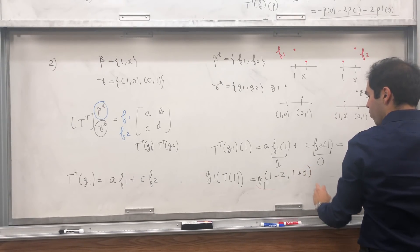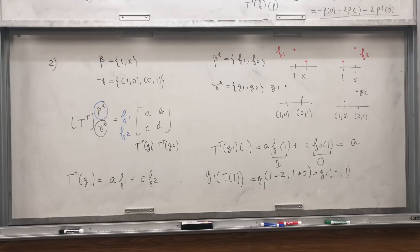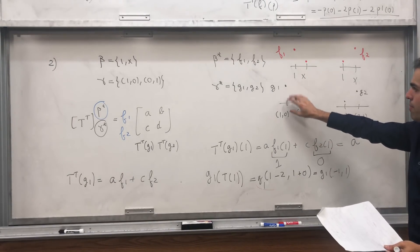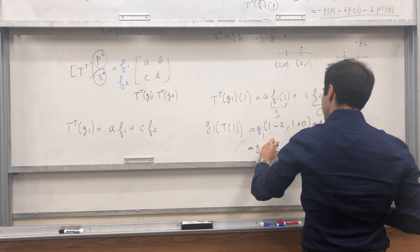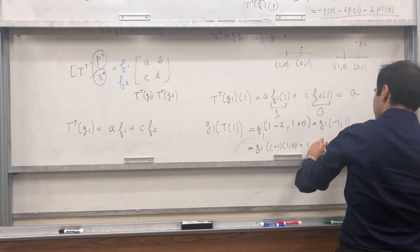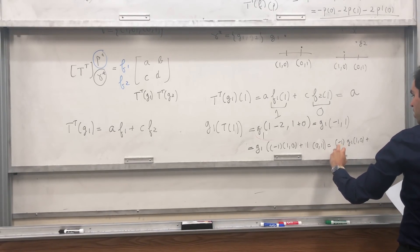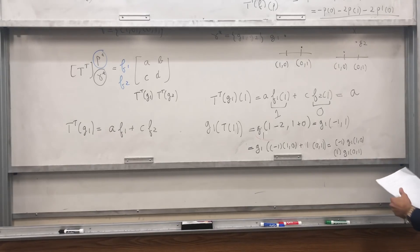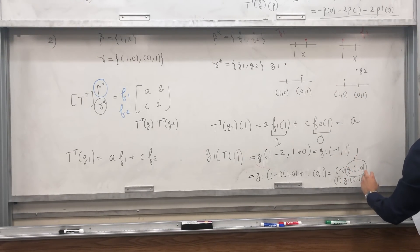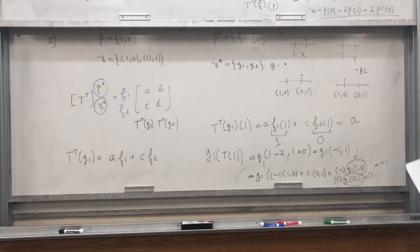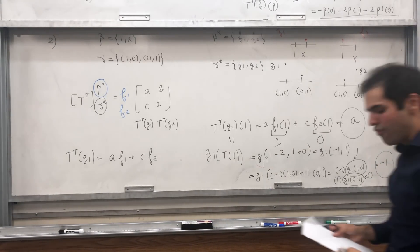So we have this. So G1 at (1, minus 2), 1 plus 0, and that's G1 at minus 1, 1. And now what is G1? Remember, we just know what it does on basis vectors, but minus 1, 1, we can decompose it in terms of basis vectors. So it's G1 at minus 1 times (1,0) plus 1 times (0,1), which is minus 1 times G1 of (1,0), remember everything is linear, plus 1 times G1 at (0,1). And now remember this nice picture. G1 at (1,0), that's 1. So G1 at (0,1) is 0, and in the end you get minus 1. So putting all this gibberish together, we then get A equals minus 1, and that gives us our first entry of the matrix.